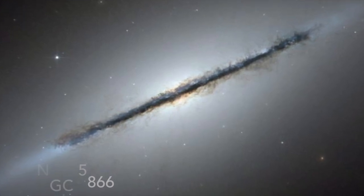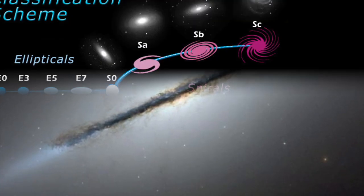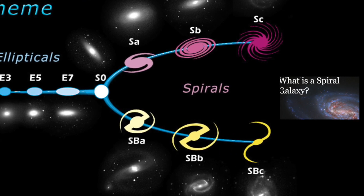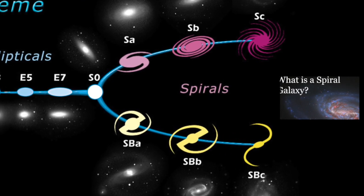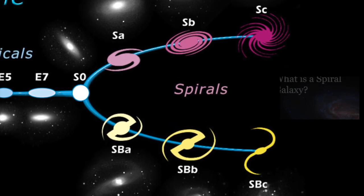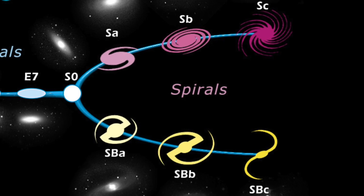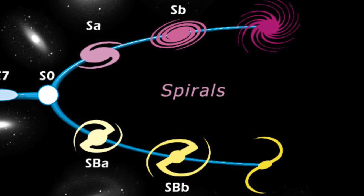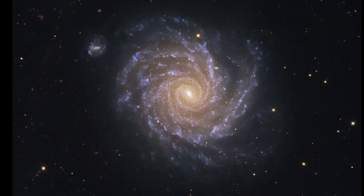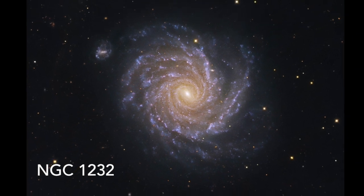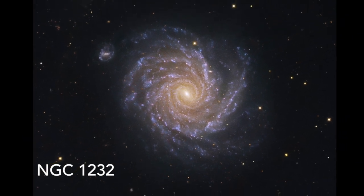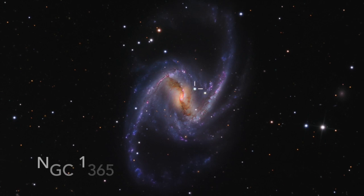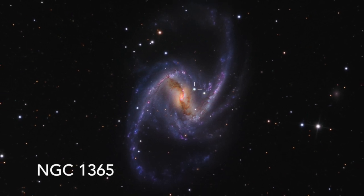From this point, the classifying system branches off into two different kinds of spiral galaxy: regular and barred, both lettered A to C based on how tightly wound their spiraling arms are. SA or SBA, for instance, are those which have more compact, tighter wound arms than galaxies belonging to SC or SBC, having loosely wound arms.